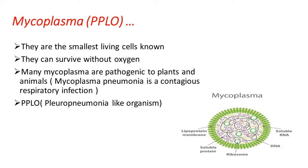Some other characters of mycoplasma: they are the smallest living cells known. If we compare the cell size of mycoplasma with eubacteria, their size is relatively small — ranging from 0.1 micrometer to 0.15 micrometer. We measure microscopic organisms with the unit micrometer.